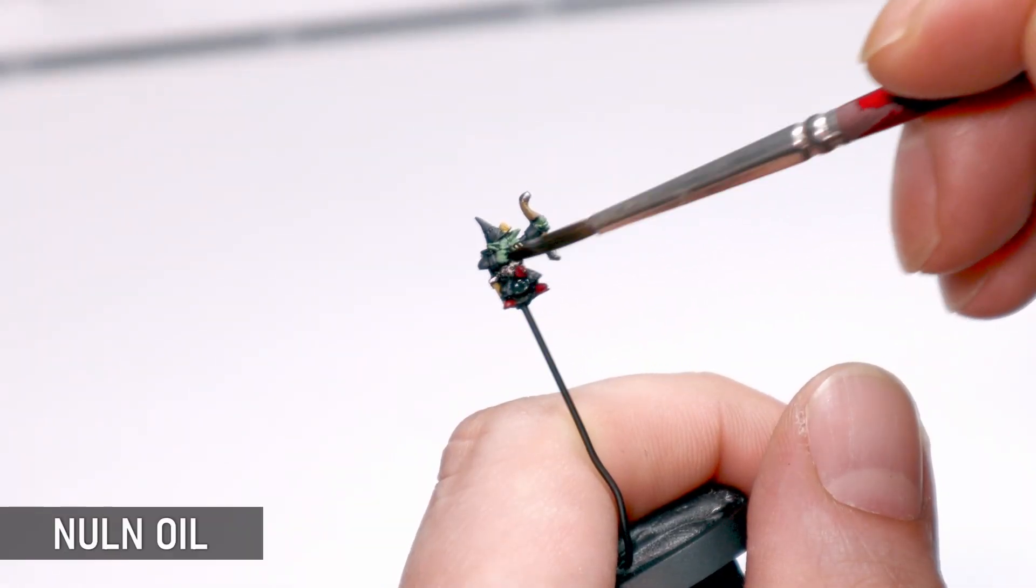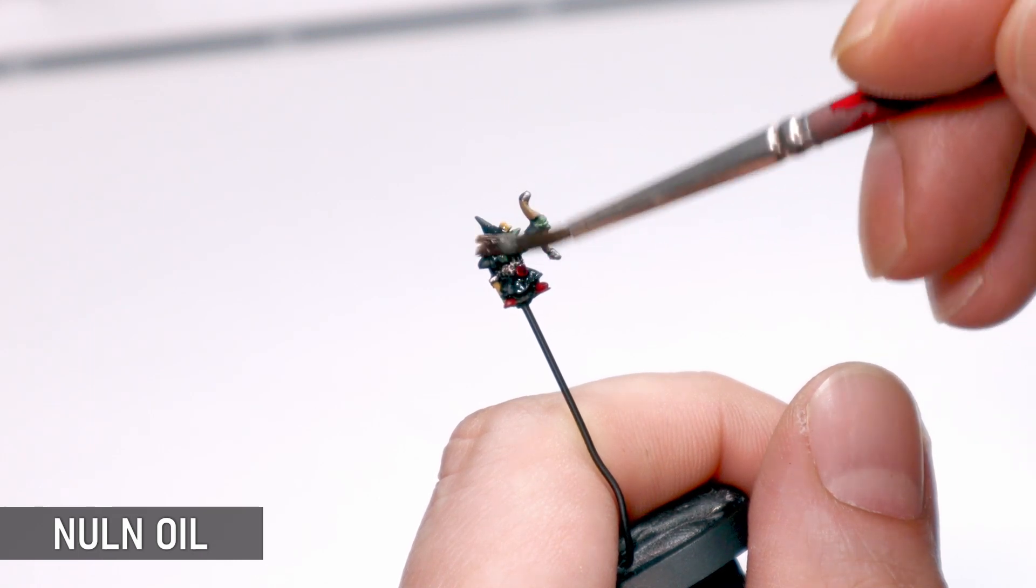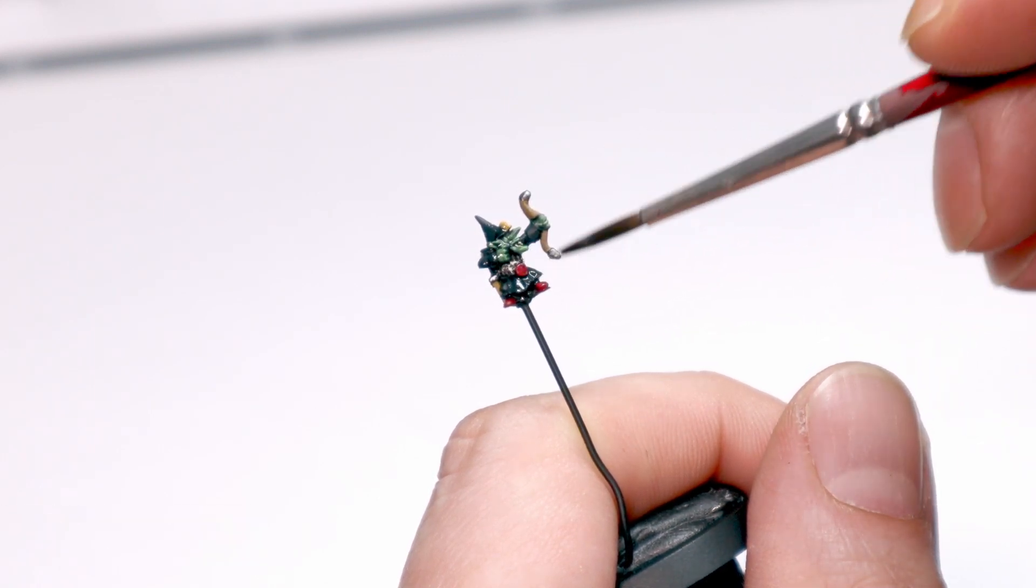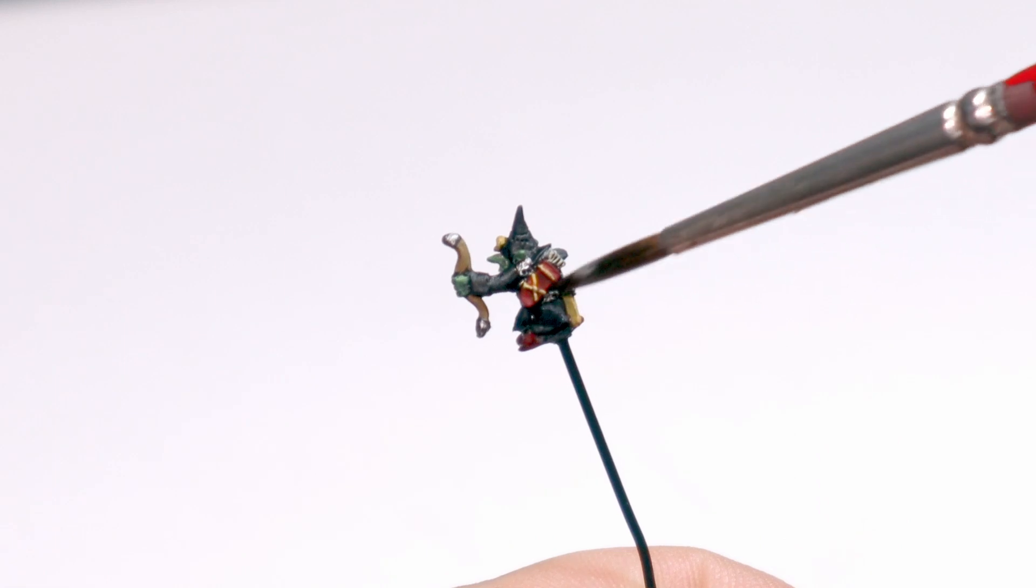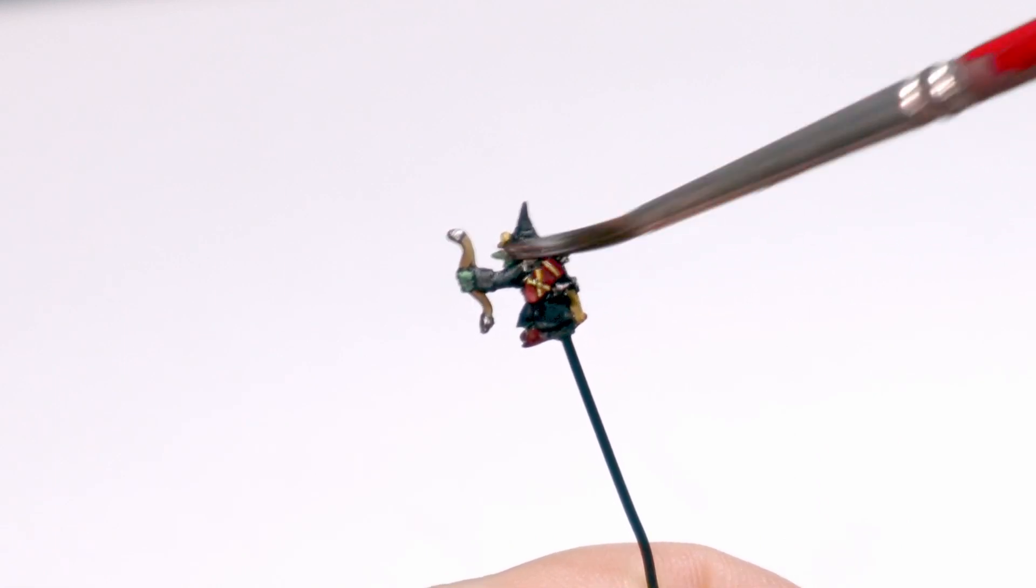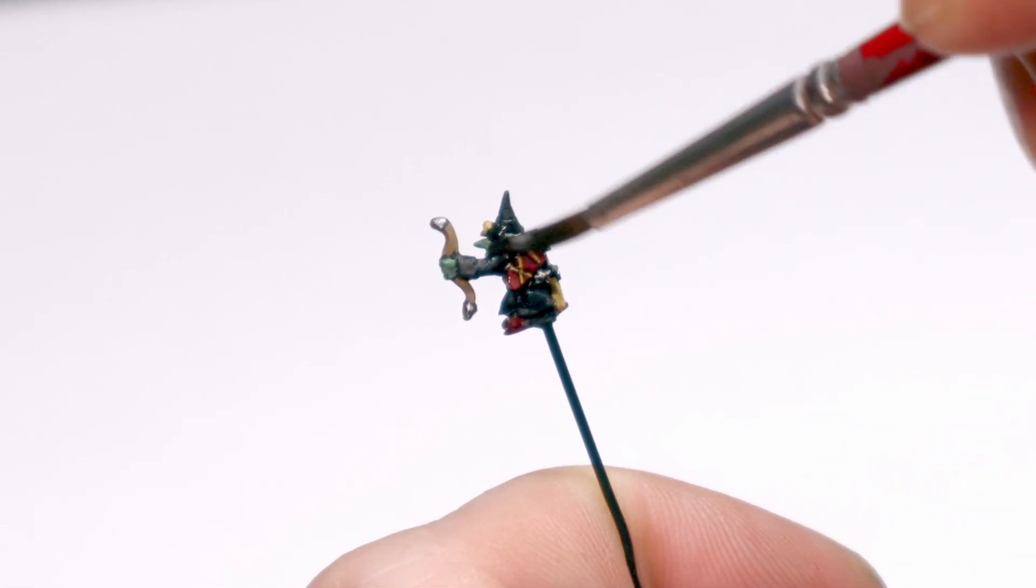Time for the classic Nuln Oil shade. I have a feeling washes are going to work well with miniatures of this scale, but we'll see. This is all kind of an experiment. I'm being extra vigilant as well for pooling because the detail is really so fine here.